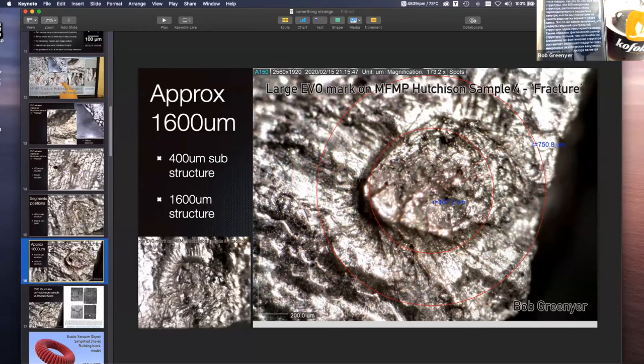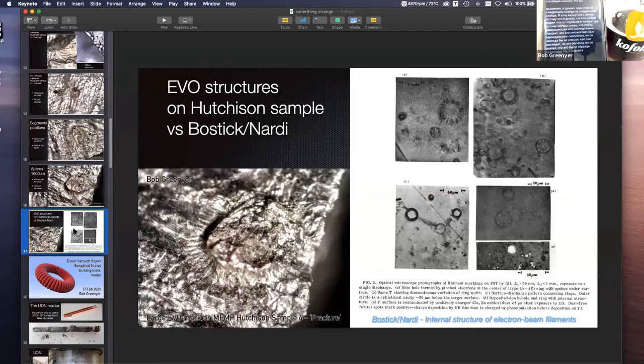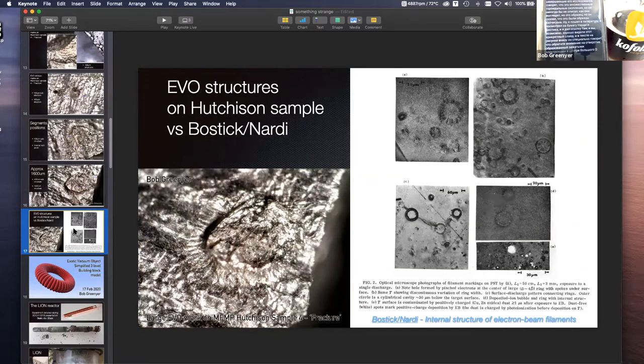I went into the literature and I looked at the paper of Nardi and Bostic. And in the text on figure two at the bottom, it specifically says that note the hole formed by pinched electrons at the center of a large D4D ring. And if you hadn't guessed it, every single structure and substructure on the Hutchison sample was this ratio D4D.